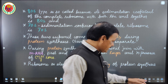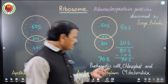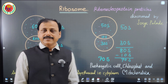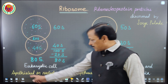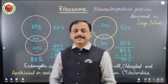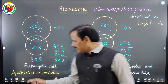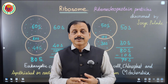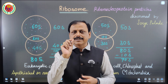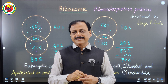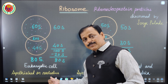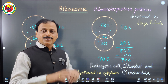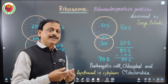Coming back to the diagram: 70S ribosomes are found in prokaryotic cells, chloroplasts, and mitochondria; 80S are found in eukaryotic cells. Regarding where ribosomes are synthesized: 80S type ribosomes are synthesized in the nucleolus, which is a small granular structure present inside the nucleus.